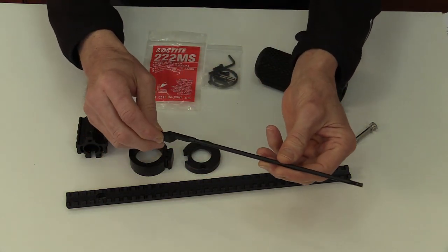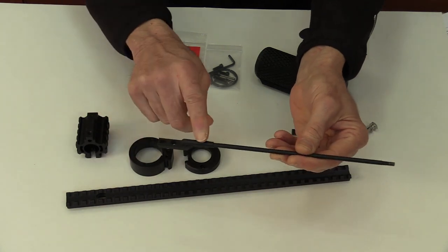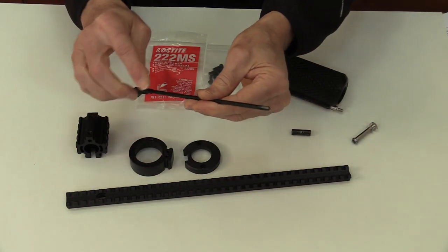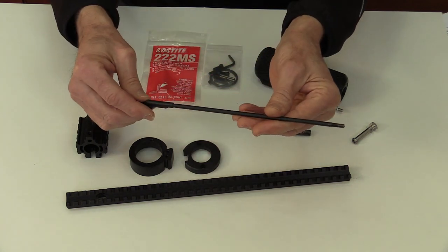Modified bolt carrier key. This item joins a standard bolt carrier key with a 3/16 inch diameter stainless steel rod. The end of the rod has left hand threads.